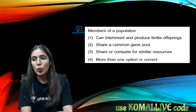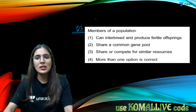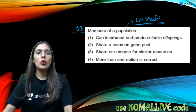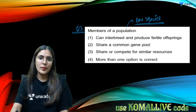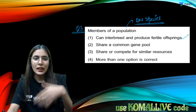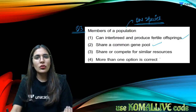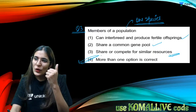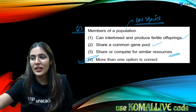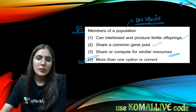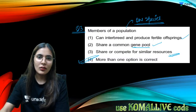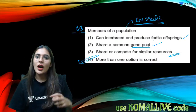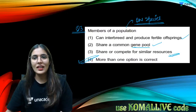Question number three: members of a population belong to one species only. Any organism in a population can interbreed and produce fertile offspring. They share a common gene pool and compete for similar resources. All options are correct. A common gene pool means similar types of genes — for example, eye color characters.